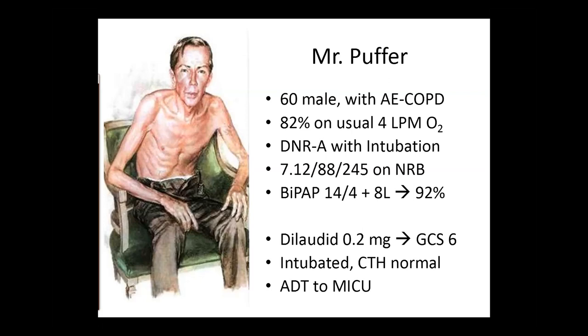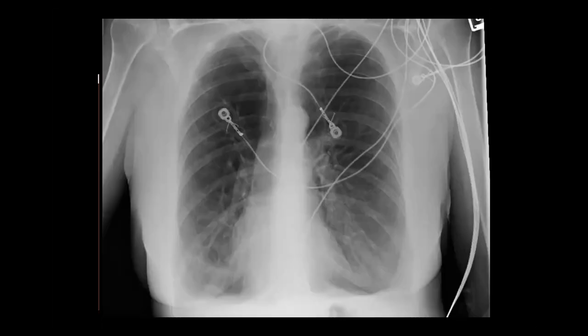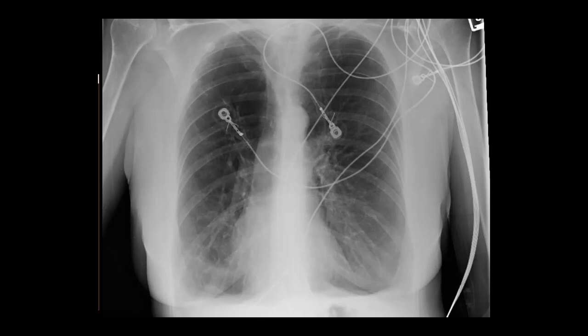The CT head is normal and you admit to the MICU. The chest X-ray shows a hyperinflated lung with the diaphragms pushed so far down they look almost inverted — severe hyperinflation with inverted diaphragm.